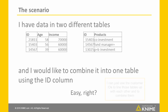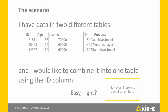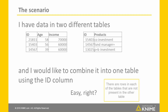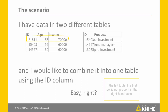It seems easy — I can just use the customer IDs to line those tables up with each other and to combine them. However, there is a complication here. There are rows in each of the tables that are not present in the other table. In the left table, for example, the first row for customer 21811 is not present in the right-hand table.